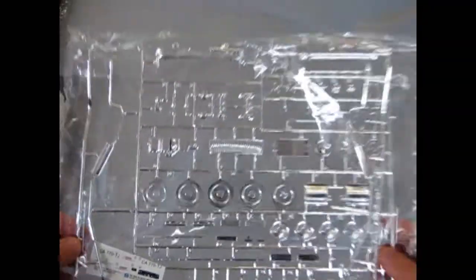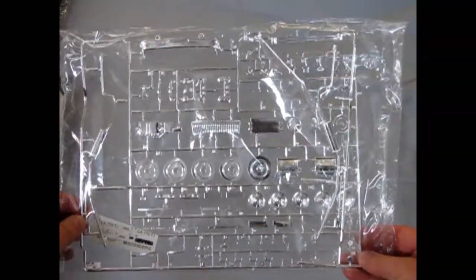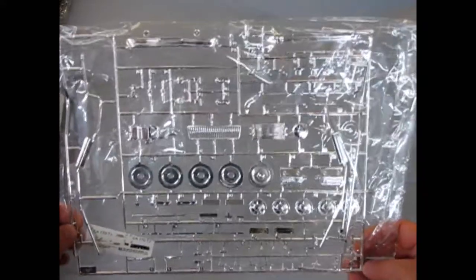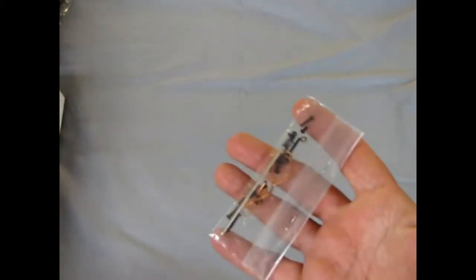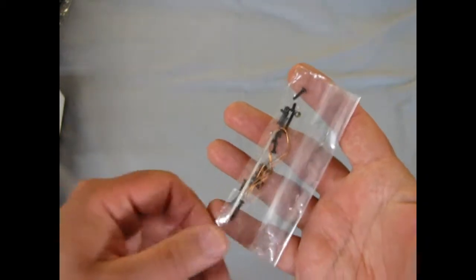And finally, or not so finally, we have our chrome parts tree. Many, many parts, including the engine and a nice grill with separate teeth that you can see through. For that added bit of realism. And then, of course, our axle springs and screws that we need for the kit.